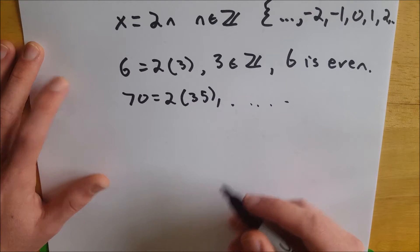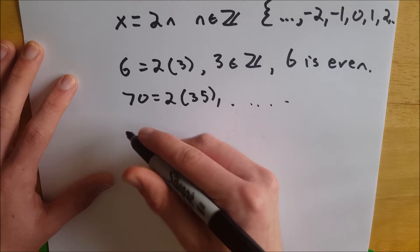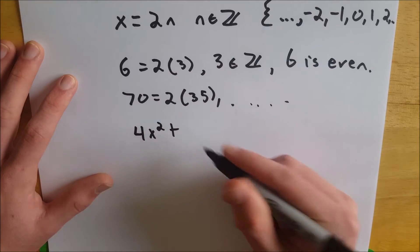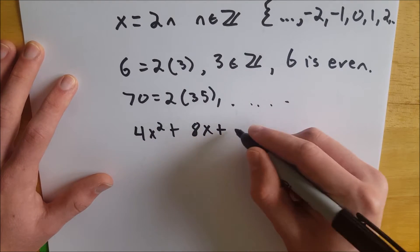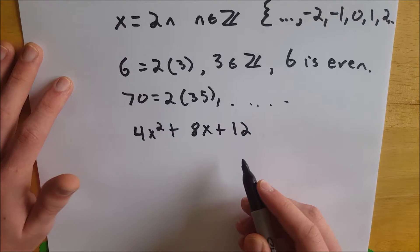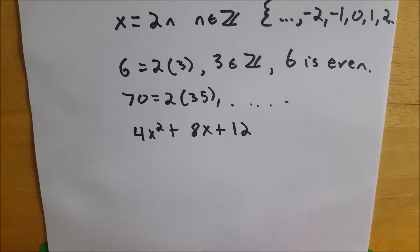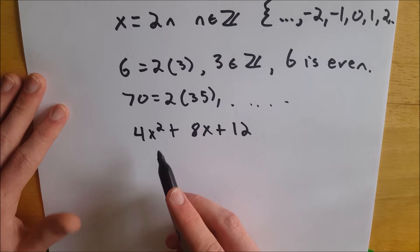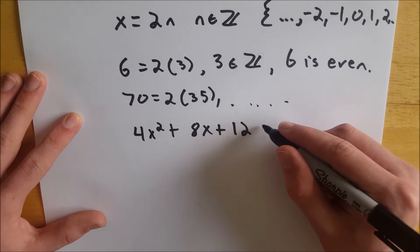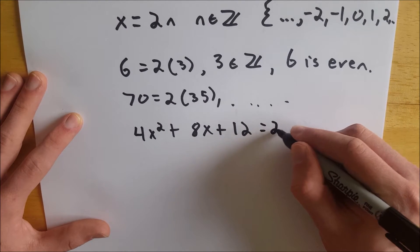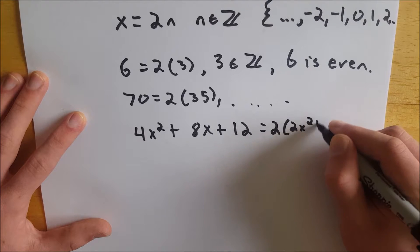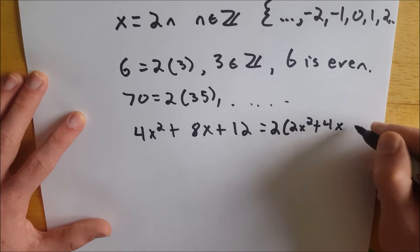So we could do it with a polynomial. Suppose that we want to prove 4x squared plus 8x plus 12—suppose we want to show that this polynomial is even. As long as we know that x is an integer, then this is super easy. All we have to do is say: notice that this polynomial equals 2 times 2x squared plus 4x plus 6.